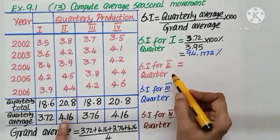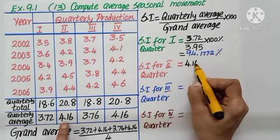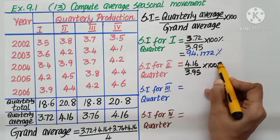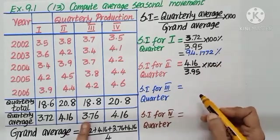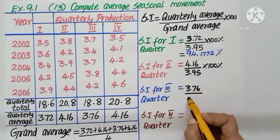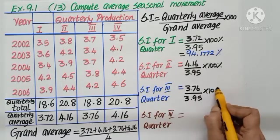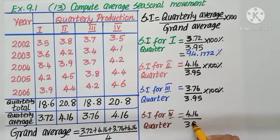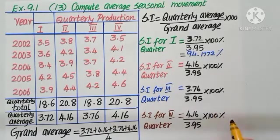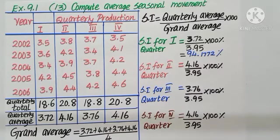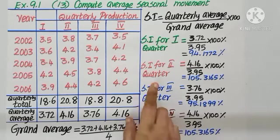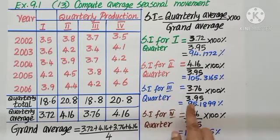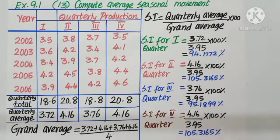Find out for the second quarter, the value 4.16 divided by 3.95 into 100. And for third quarter, 3.76 divided by 3.95 into 100. Fourth quarter, 4.16 divided by 3.95 into 100. Let us simplify and find out the answer. Check your answer for second and fourth quarter, we get 105.3165. And for third quarter, it is 95.1899.